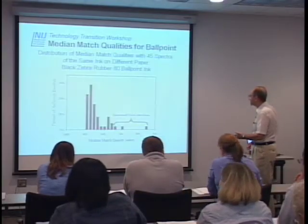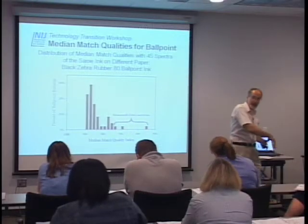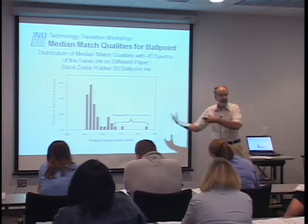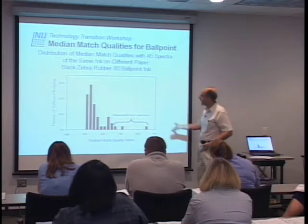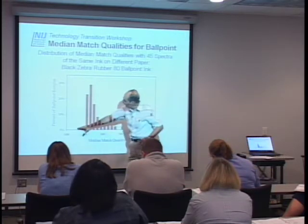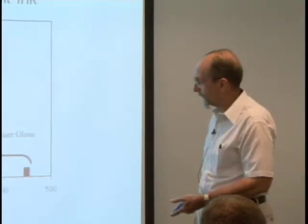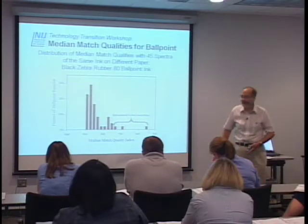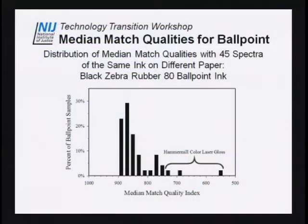Showing a distribution of the median match quality now: we took all 48 spectra, ran through all the matches against the other 45 spectra on different papers, and plotted the medians for all 48 samples. We don't get quite as high up here because no median gets really high. We find again that the only three bad actors are those laser gloss papers — their medians are bad simply because they don't match with anything else. But everything else does pretty well, 750 and up. I'd like to see above 800, but 750 isn't too bad for a random set of samples.